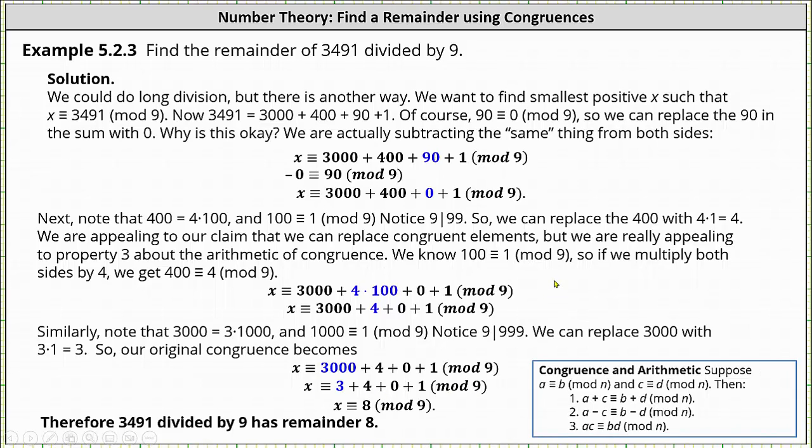Simplifying one last time, we have x ≡ 8 (mod 9). Because 8 is in the range [0, 9), we now know that when 3491 is divided by 9, the remainder is 8. I hope you found this helpful.